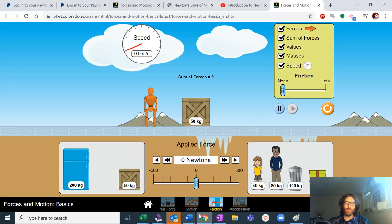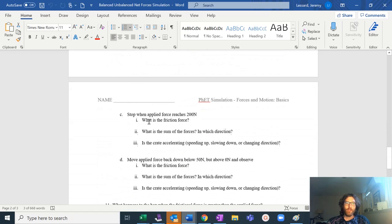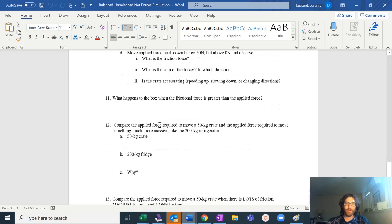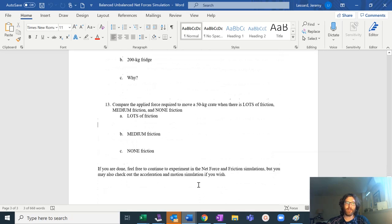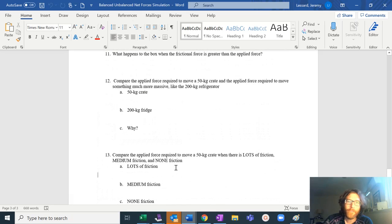So we're going to first start off thinking about with the friction bar at medium, what happens? And then we're going to think about what would happen with the friction bar at different levels. So if we have lots of friction, how is that different? If we have no friction, how is that different? And so this is pretty straightforward.